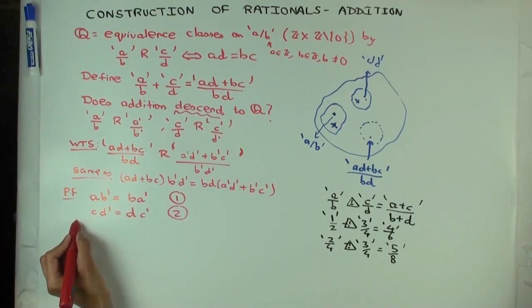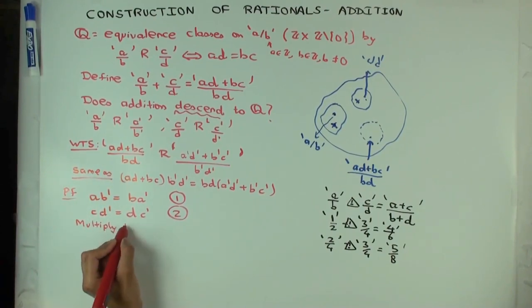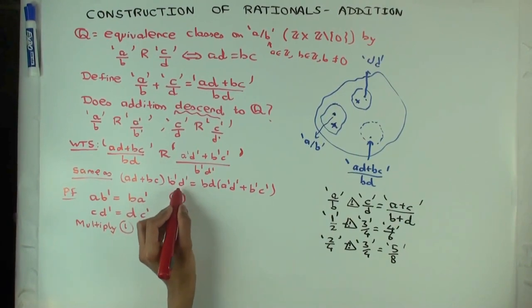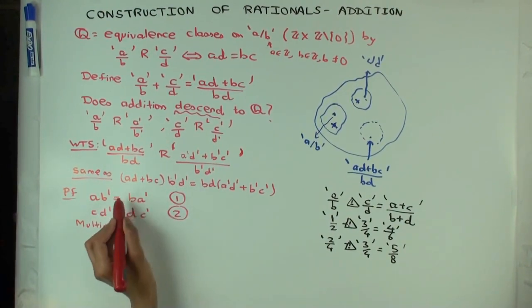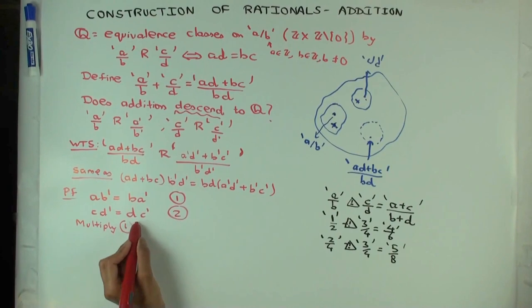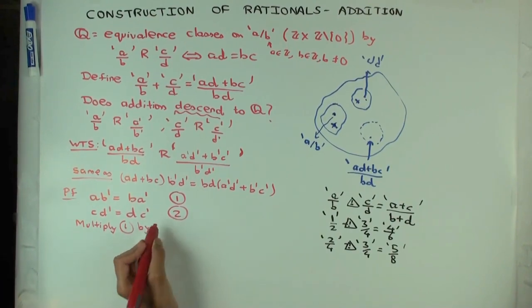So what do you need to multiply one by? Well, here you have adb prime d prime. So it's almost like ab prime, except you multiplied by dd prime. So multiply one by dd prime. What do we get? ab prime dd prime equals ba prime dd prime.